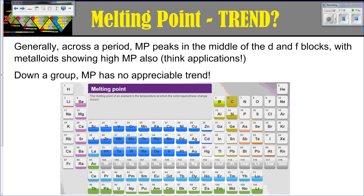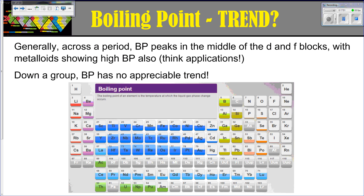Melting point: across a period, melting point will also peak in the middle of the D and F blocks. This is really good for application — it's useful to understand the melting points of certain metals you'll actually see in the real world. However, as you look down a group, melting point has no trend. Boiling point follows the same concept: it peaks in the middle of the D and F blocks, but moving down a group it also has no appreciable trend. Again, this is all important for application.